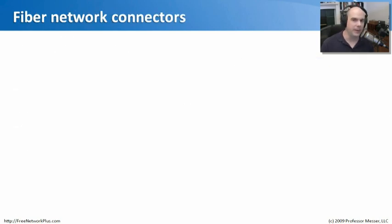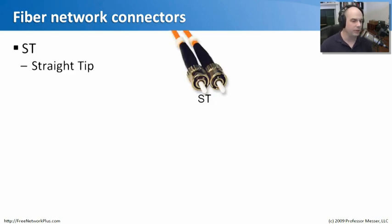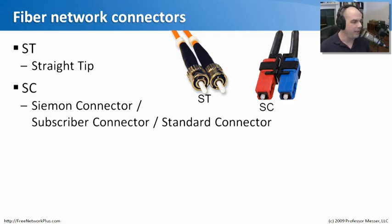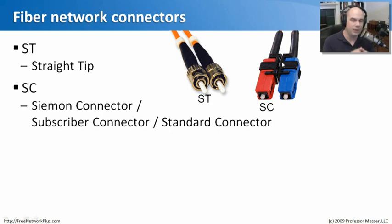Fiber network connections are varied — there are many different kinds of fiber connectors. One of the original types in enterprise networks is the ST connector, which stands for straight tip. The fiber sticks straight out of the tip, and it uses a bayonet-type connector — you plug it in, turn it, and it locks in place. However, it took up a lot of room and it was easy to mix up the transmit and receive sides. So we came up with SC connectors, named after the company Siemon, also called subscriber or standard connectors. They include a locking clip that keeps transmit and receive correctly oriented.